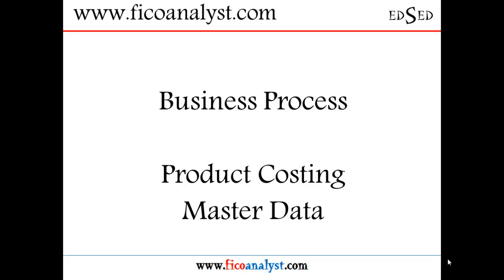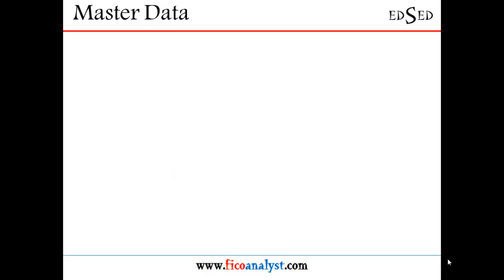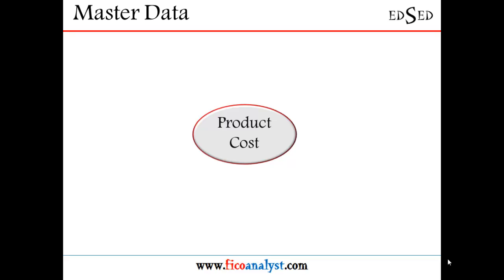Today in this short presentation, I would like to go over product costing master data and the business process. The product costing master data is the master data coming from different modules of SAP — the MM module, production planning module, the CO module, and FI modules. The product cost would be estimated based on the information from these modules.